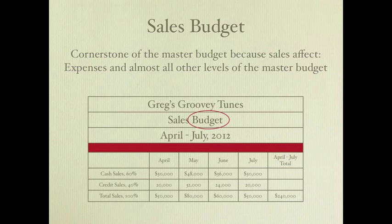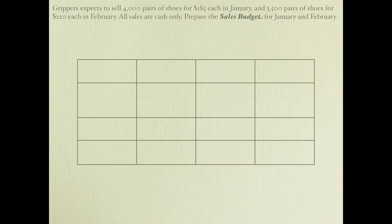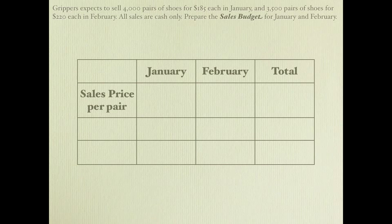Let's look at an example of a sales budget. Grippers expects to sell 4,000 pairs of shoes for $185 each in January and 3,500 pairs of shoes for $220 each in February. All sales are cash only in this case. The first thing to do is set up a grid with months January and February and a total column, then record the sales price per pair: $185 in January and $220 in February.